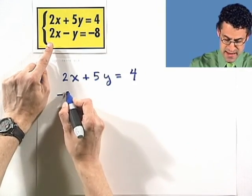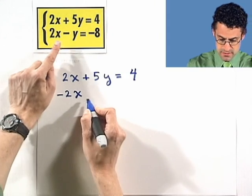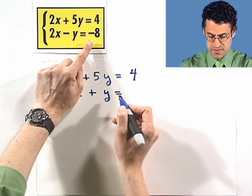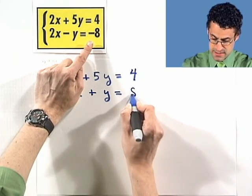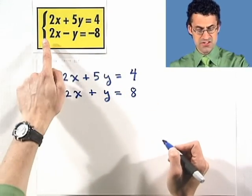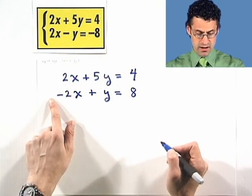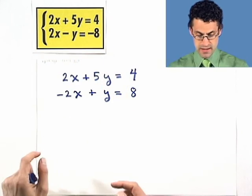Basically the signs are going to become the opposite of what they currently are. Here I'm going to see a negative 2x. This becomes a plus y, and that equals 8. So I just took the second equation and multiplied through by negative 1, and you can see that the signs just got flipped.